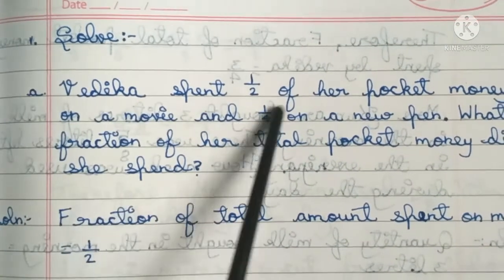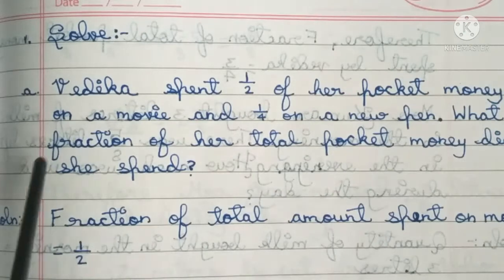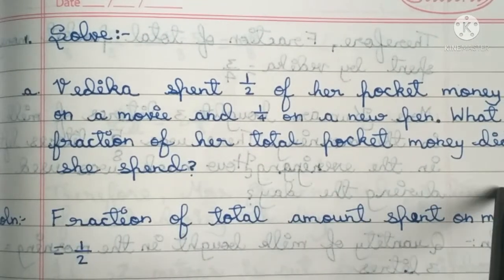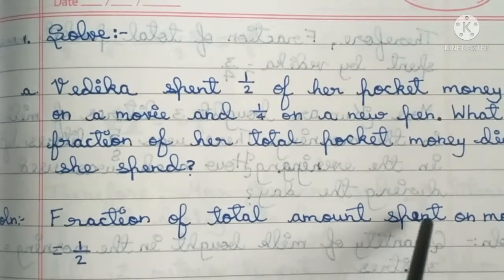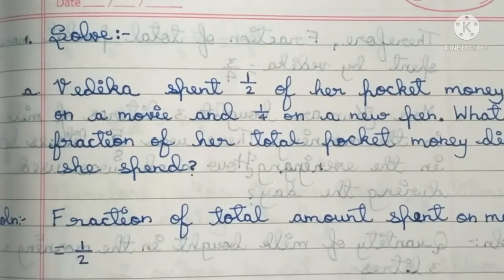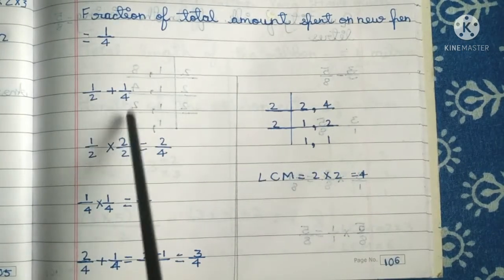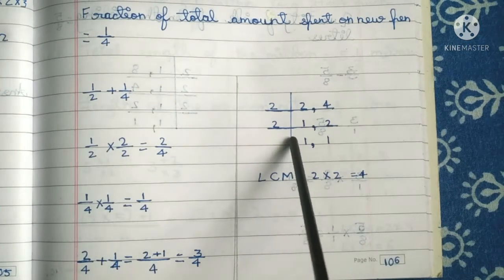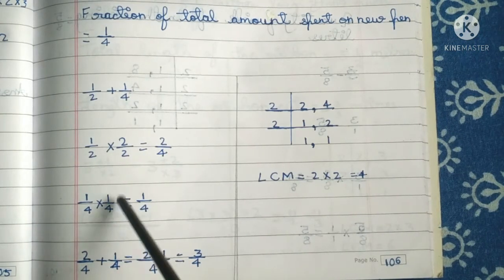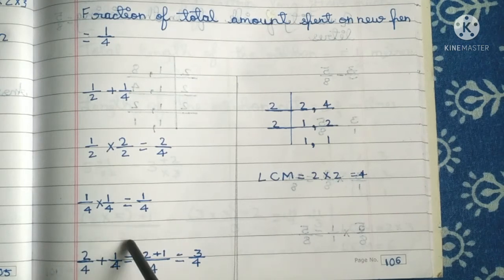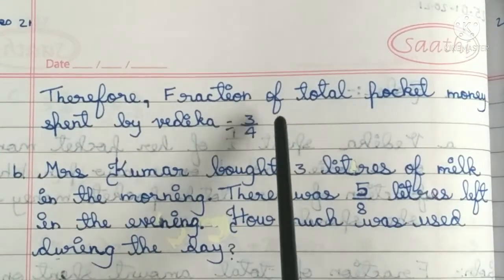Solve. First one: Vedika spent half of her pocket money on a movie and one-fourth on a new pen. What fraction of her total pocket money did she spend? Solution: Fraction spent on movie is 1/2. Fraction spent on new pen is 1/4. Adding 1/2 plus 1/4: LCM is 4. 1/2 multiplied by 2/2 is equal to 2/4. 2/4 plus 1/4 is equal to 3/4. Therefore, fraction of total pocket money spent by Vedika is 3/4.